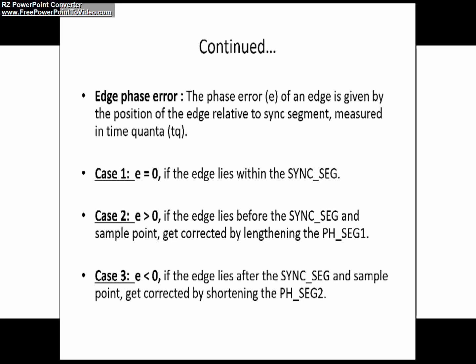Consider case 1. Suppose the transmitter is transmitting its bit to a receiver. If the bit edge occurs for the receiver within the sync segment, that means proper or legitimate occurrence within the sync segment.